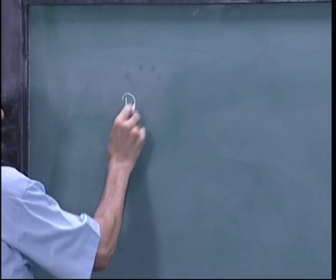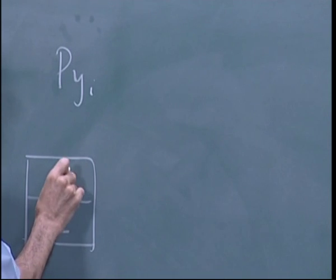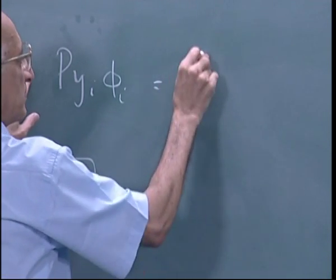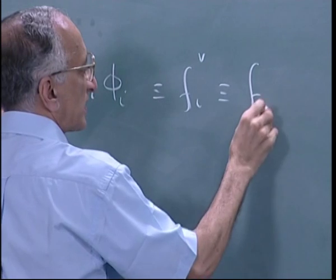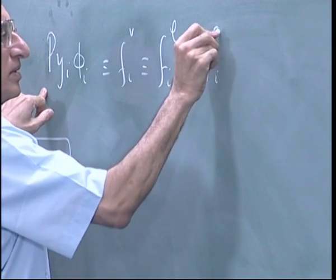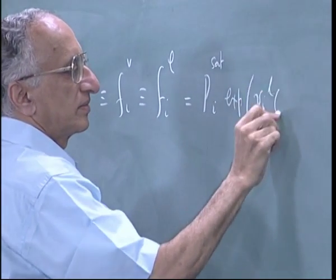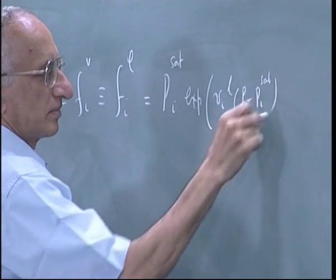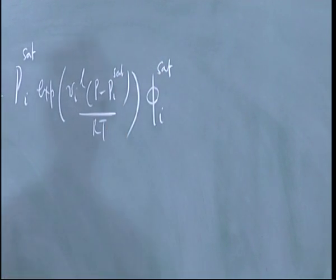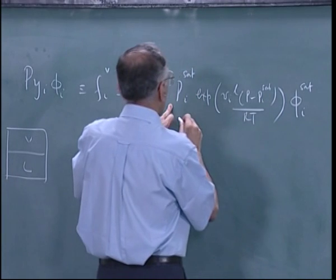We are doing vapor-liquid equilibria. This is the fugacity of the vapor phase, and this is equal to the fugacity of the liquid component i, which equals the saturation pressure times a pointing correction times a non-ideality correction at saturation. Up to this point it is the fugacity of pure i.